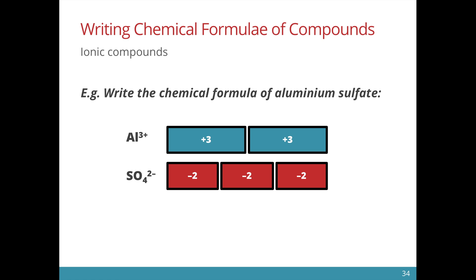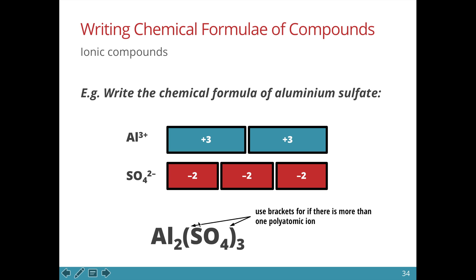We find that the chemical formula of aluminium sulfate is Al2(SO4)3. Again, when there is a polyatomic ion and there is more than one of it, we use brackets so that the subscript 3 applies to the whole of the sulfate ion.